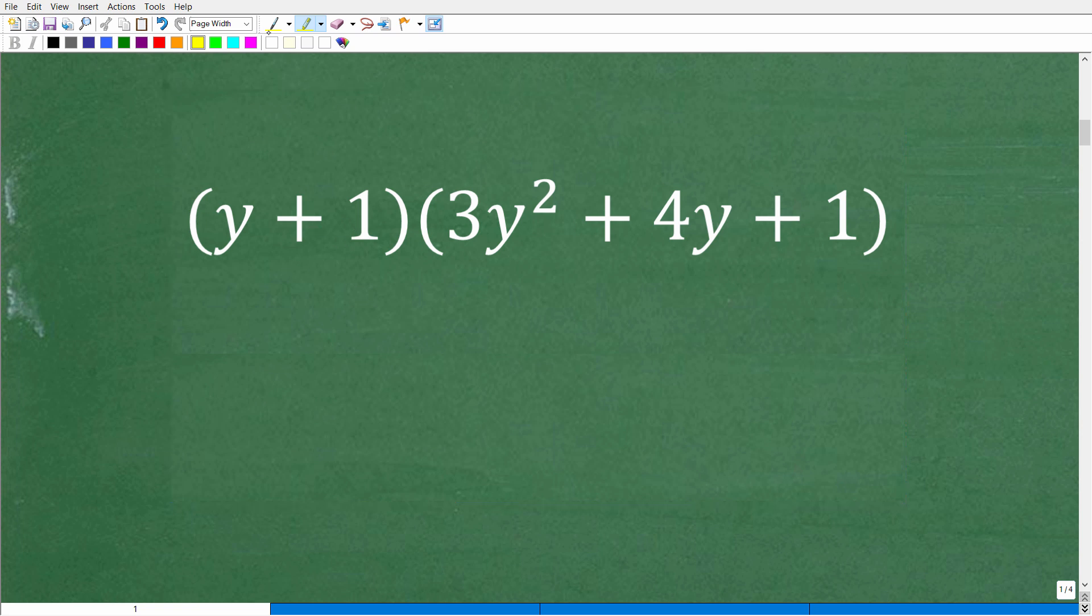Now, what we want to do is look at the first term in this polynomial. That is y. So now we're going to think of this as a distributive property kind of problem. So you're going to take this y, and you're going to multiply it by all these terms in the other polynomial. So that's going to be y times 3y squared, then y times 4y, and then y times 1. So you're going to put your answers right there.